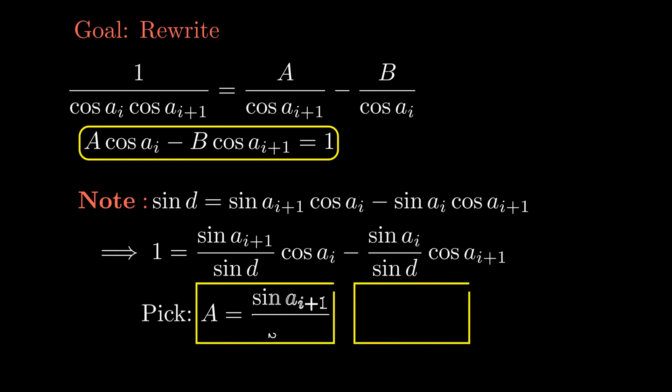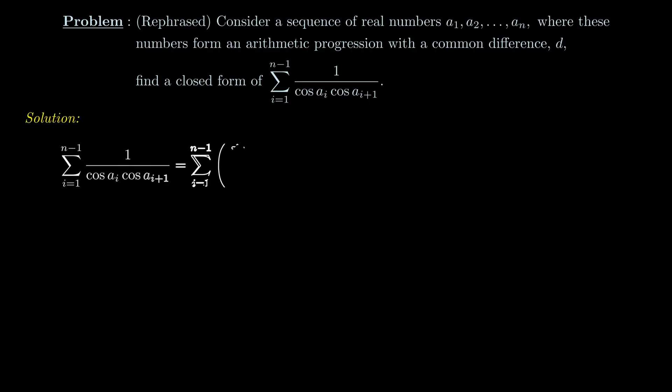Thus we can pick our A to be sine aᵢ₊₁ over sine d and B to be sine aᵢ over sine d. Going back to our sum, we can pull out the factor of 1 over sine d and notice that is equivalent to tangent aᵢ₊₁ minus tangent aᵢ. And look, now we just have a telescoping sum.